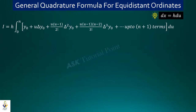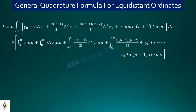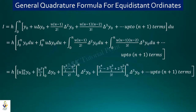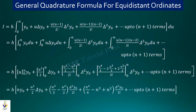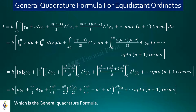With the transformed variable u, the differences Δy₀, Δ²y₀, Δ³y₀, and higher differences of y₀ are constants. So integrating with respect to u and applying simple integration rules gives the expression. After placing the limits and simplifying, we obtain the final expression — this is the general quadrature formula that we derive.